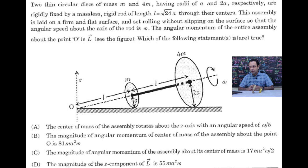The question is: there are two thin circular disks of mass m and 4m, having radii a and 2a respectively. They are connected by a massless rigid rod of length √24a through their centers. The assembly is laid on a firm and flat surface and set rolling without slipping, such that the angular speed about the axis of the rod is omega. The angular momentum of the entire assembly about the point O is L.